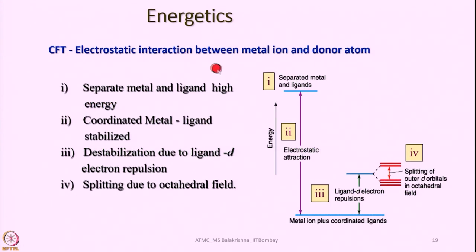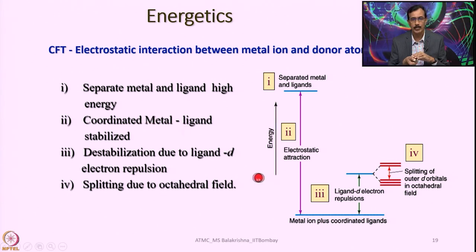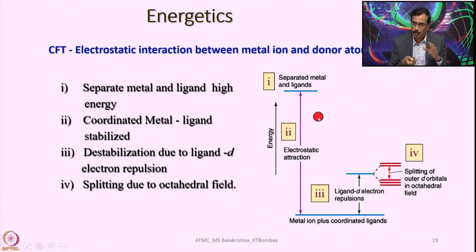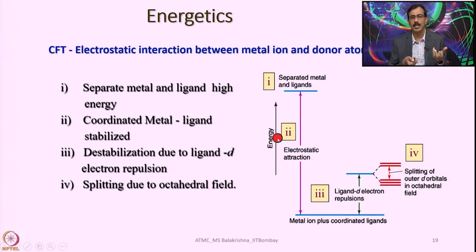This is depicted in the diagram. Electrostatic interaction between the metal ion and donor atom is what crystal field theory describes. Separated metal and ligands have high energy; coordinated metal and ligands are stabilized. Destabilization due to ligand–d electron repulsion elevates the energy again, and further splitting due to the octahedral field is shown. One should write: separated metal and ligands, then electrostatic attraction gives metal ion plus coordinated ligands at lower energy.